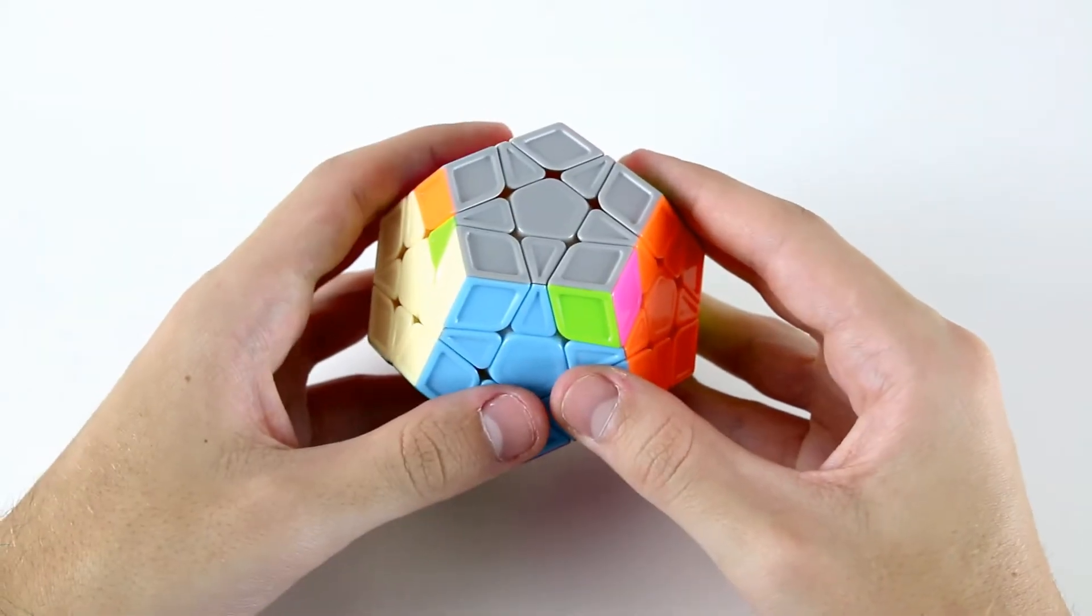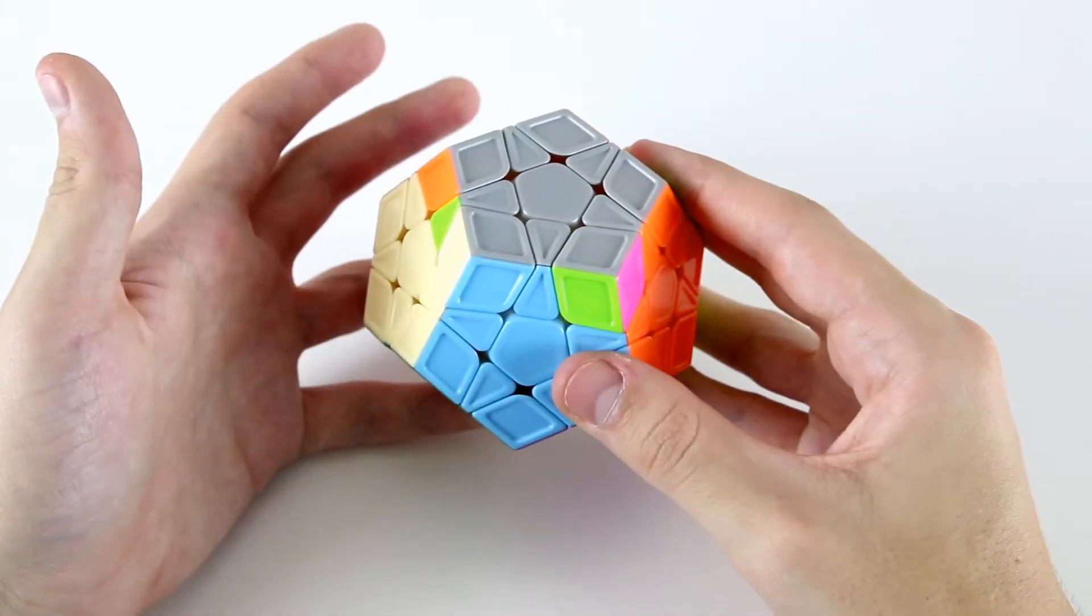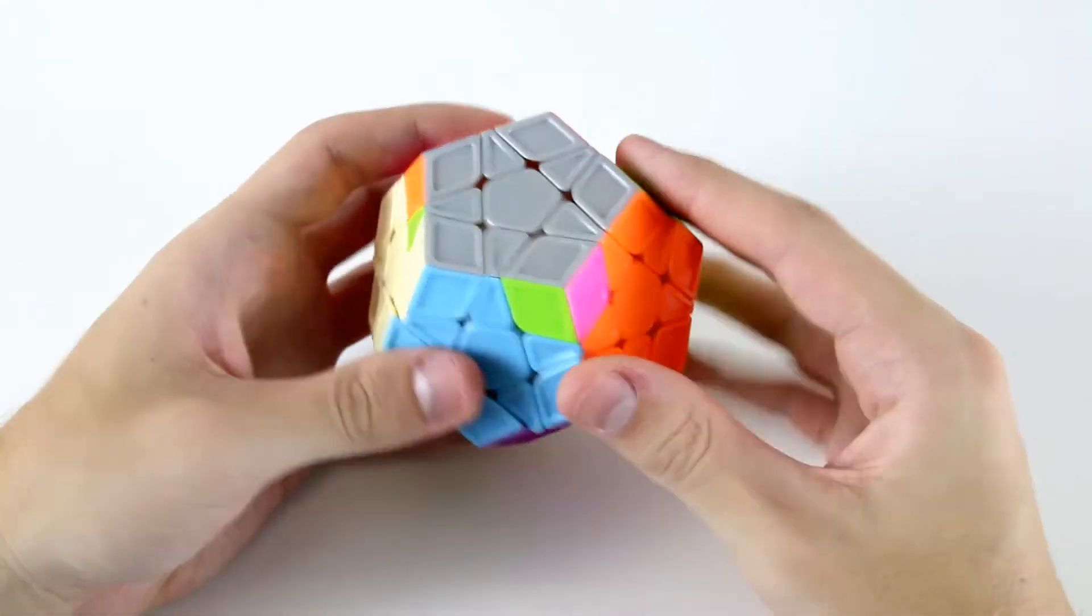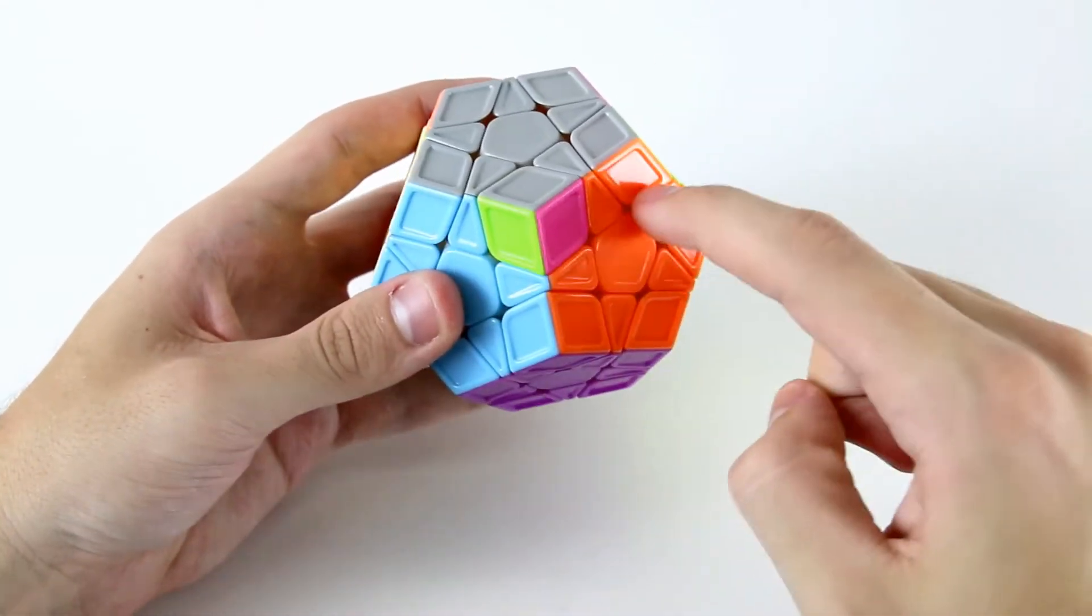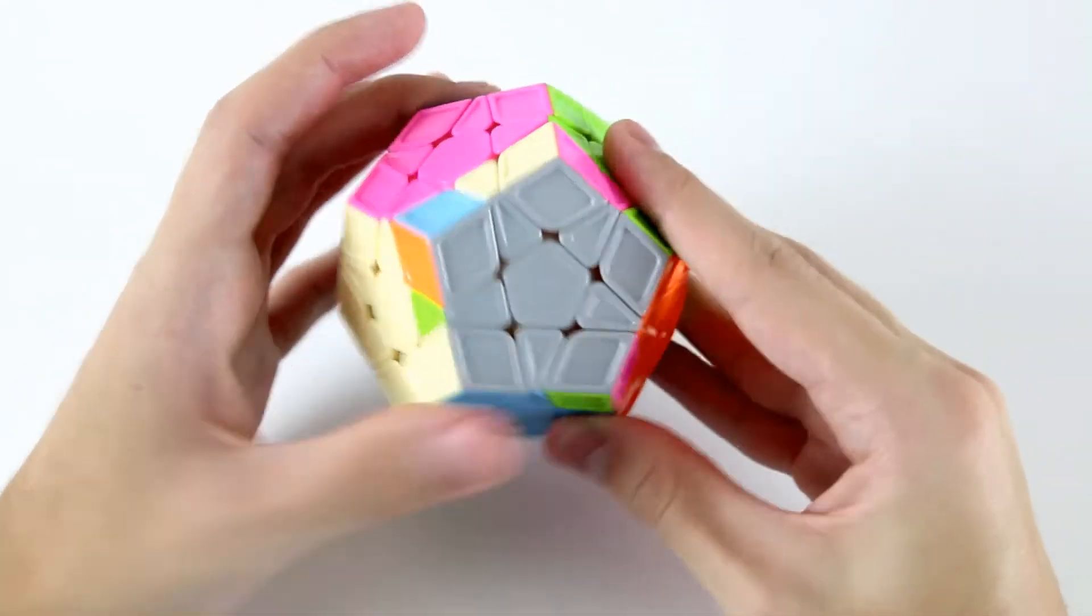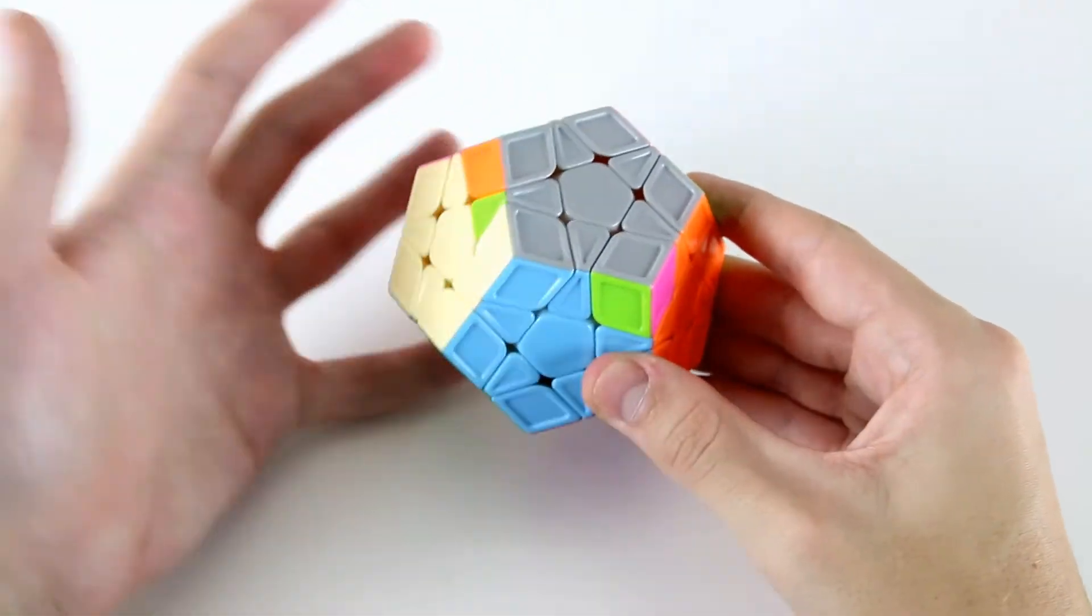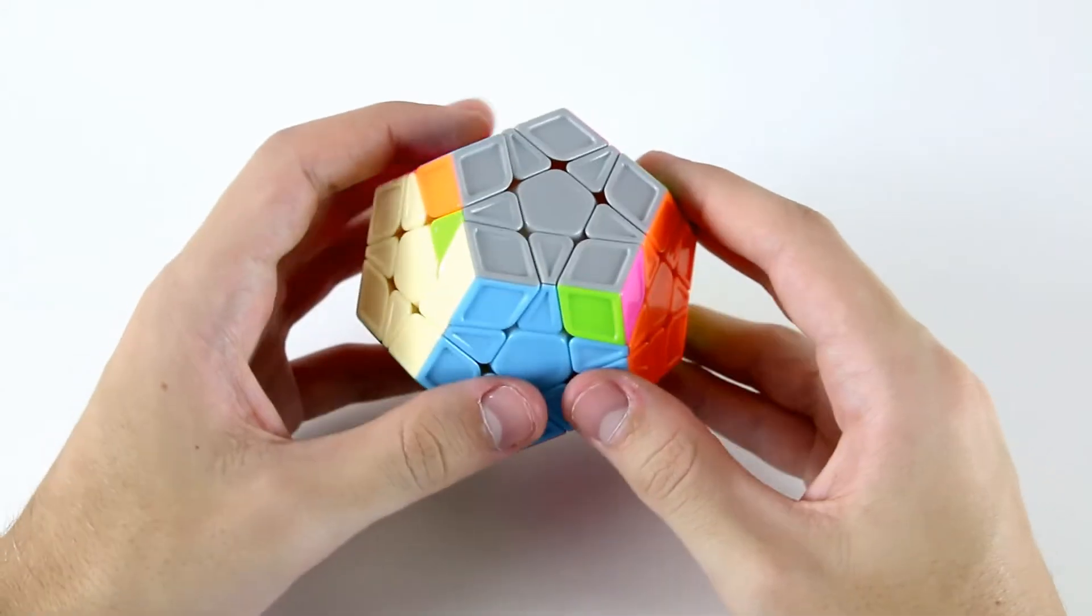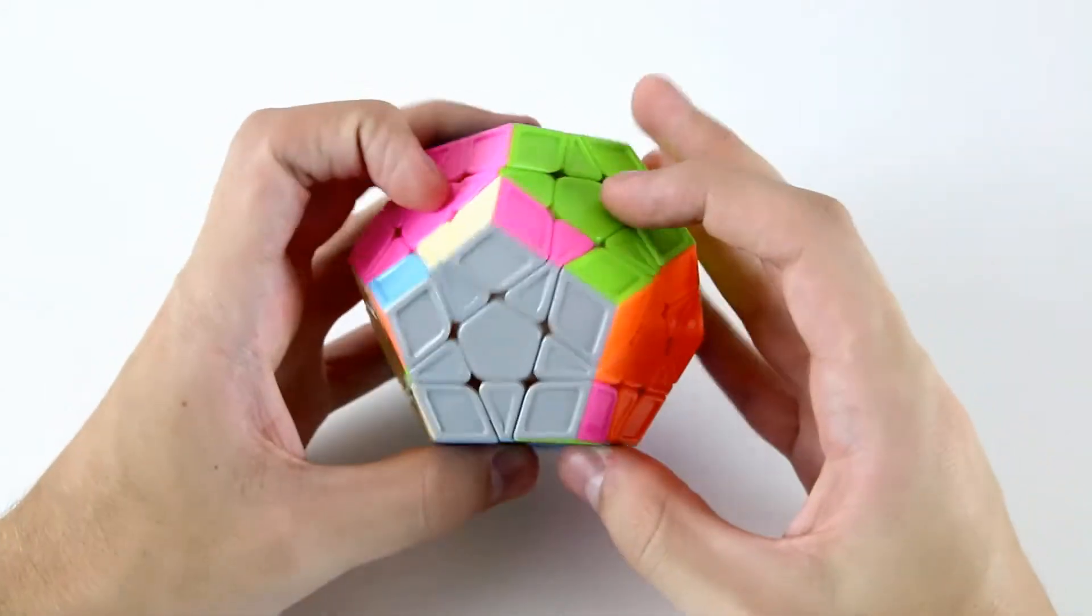That's a really easy way to get a lot more one-look OLL cases on the Megaminx, and we can even use some of our PLL algorithms in the same way. For example here, we have something that looks like a Y permutation, and for this specific case we can actually solve this PLL in one look just using our Y permutation, as opposed to solving the edges and then solving the corners.